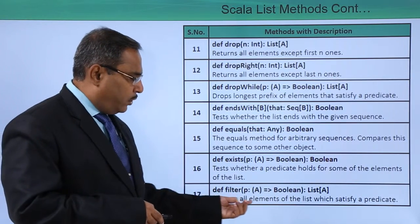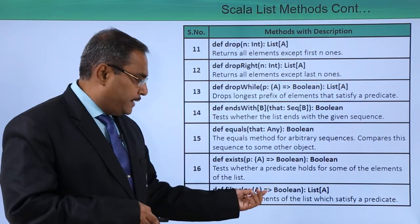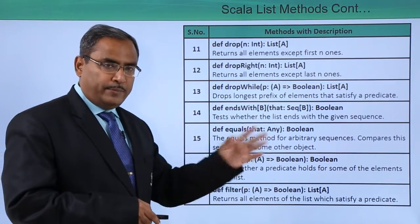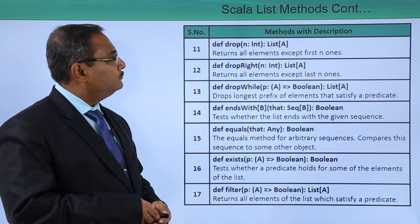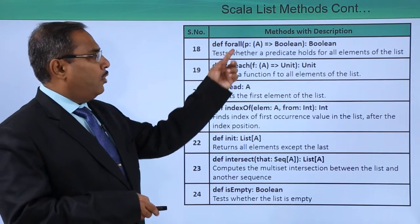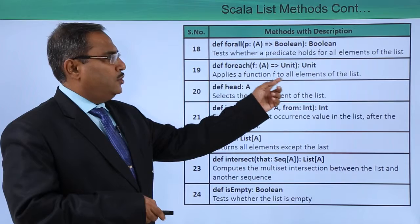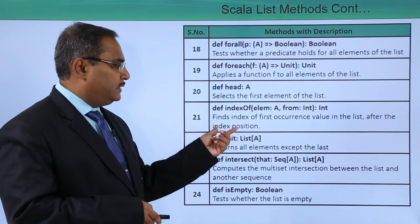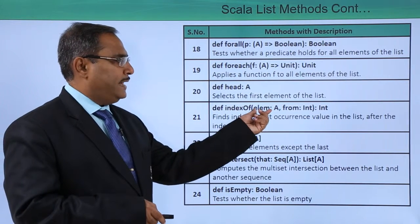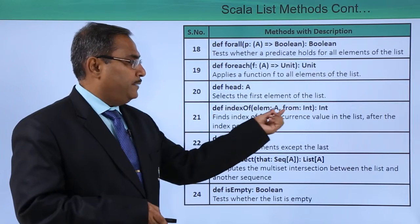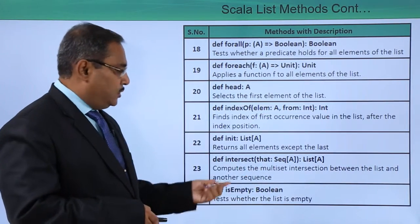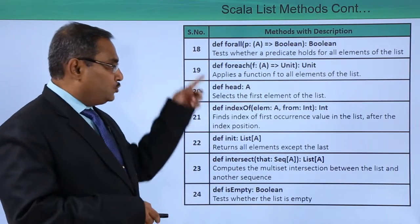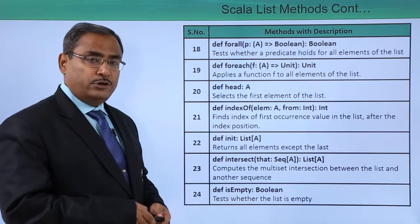The `filter` method returns all elements of the list which satisfy a certain predicate — only elements for which the condition is true will be added to the returned list. We have `forall` and `foreach`, which applies the function f to all elements of the list. `indexOf` finds the index of the first occurrence of a value in the list after a given index position. `intersect` computes the multi-set intersection between the list and another sequence. There are plenty more such methods available.